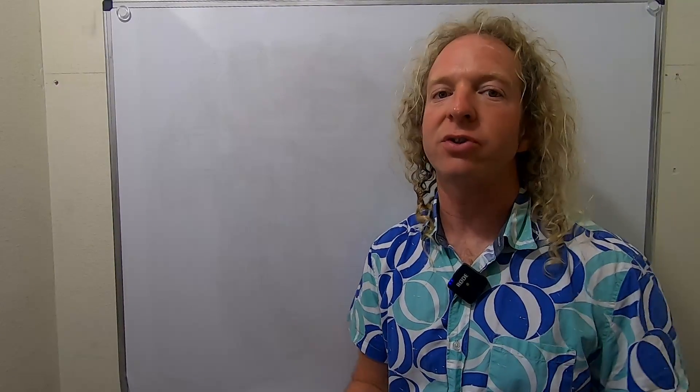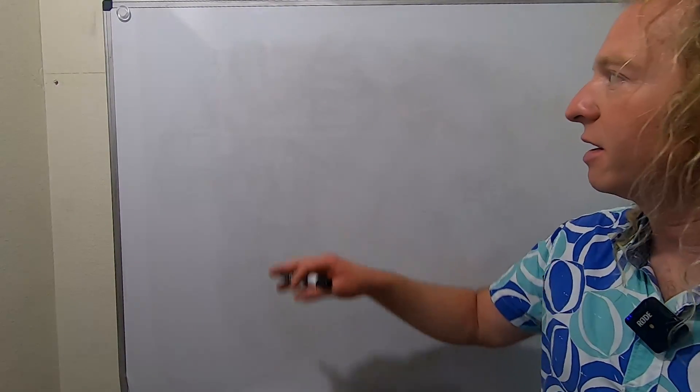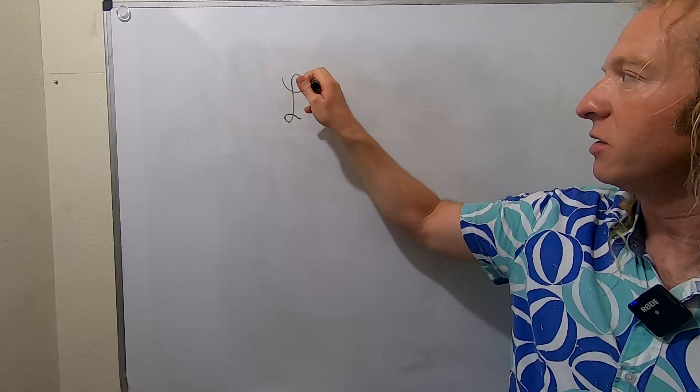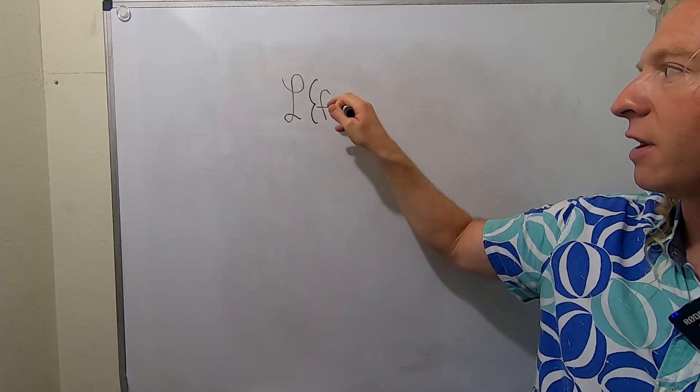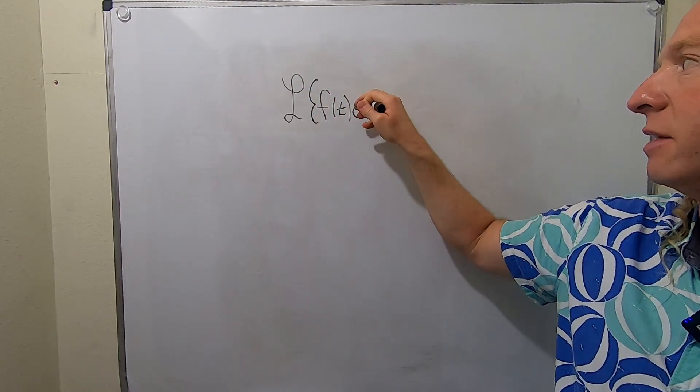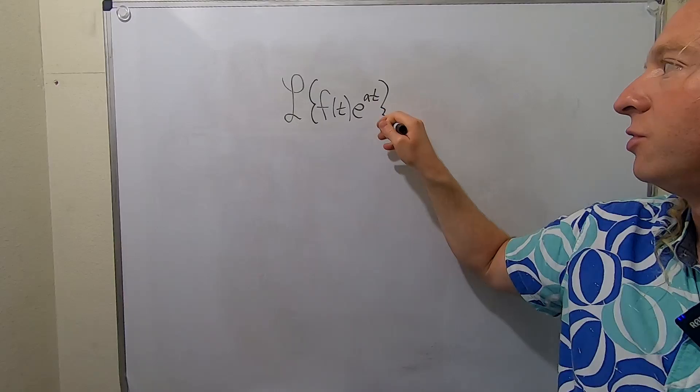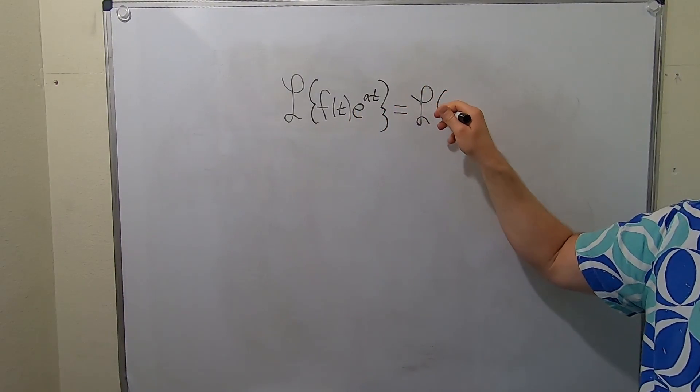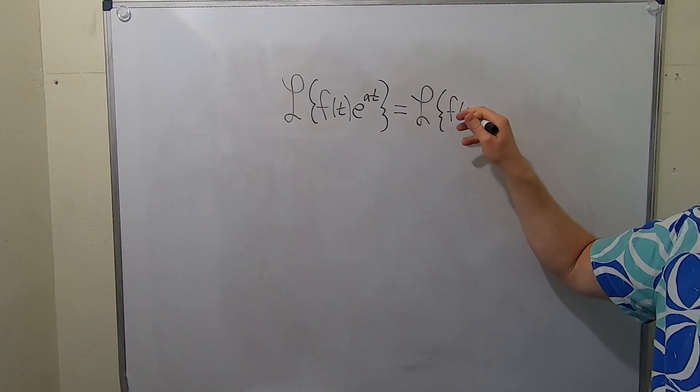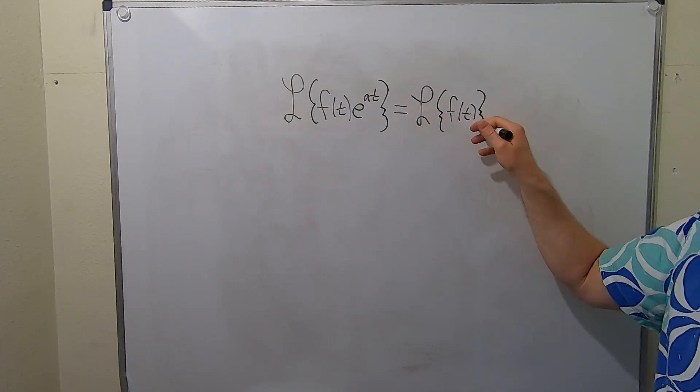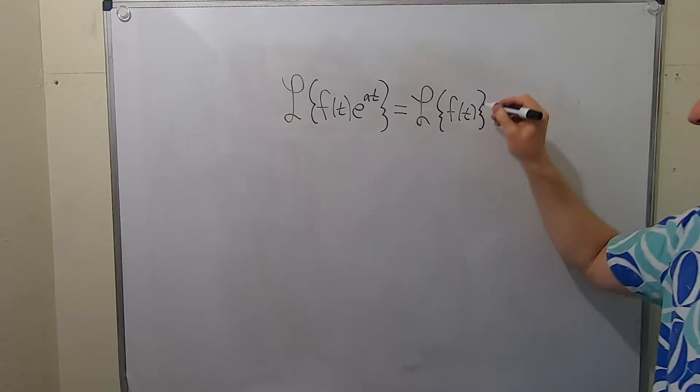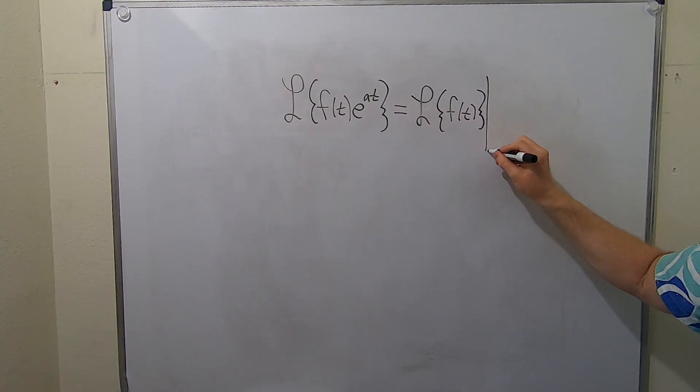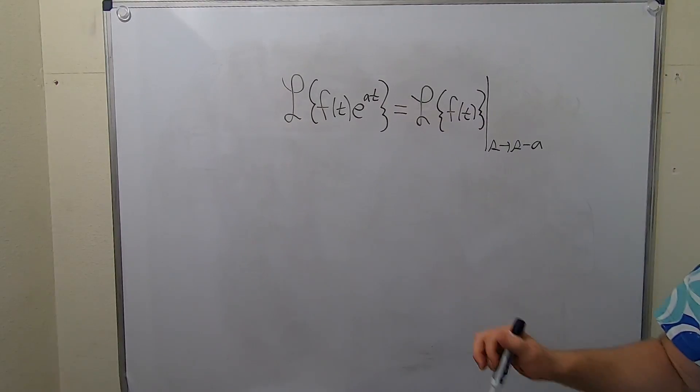In this video I want to go over what's called the first translation theorem. It basically says if you have the Laplace of a function f(t) times e to the at, what you can do in this case is you can just drop the e. So this is equal to the Laplace of f(t). And then you replace the e with a shift. So you draw a line and you write s to s minus a. Let's go ahead and do an example right away so you see how this works.